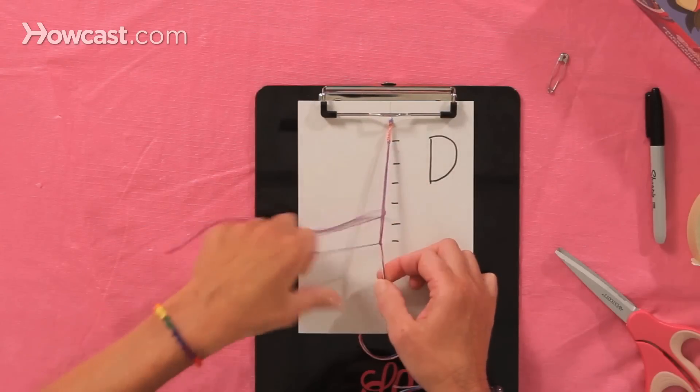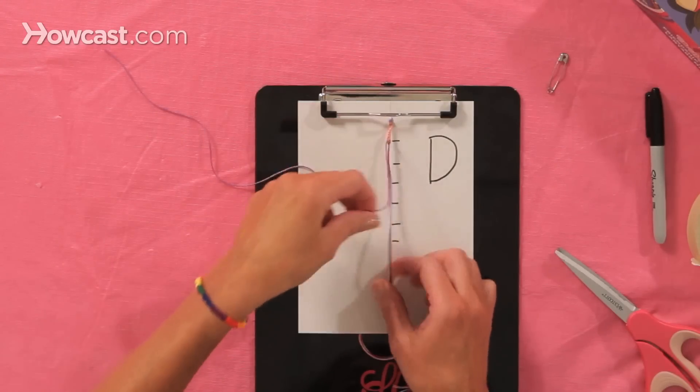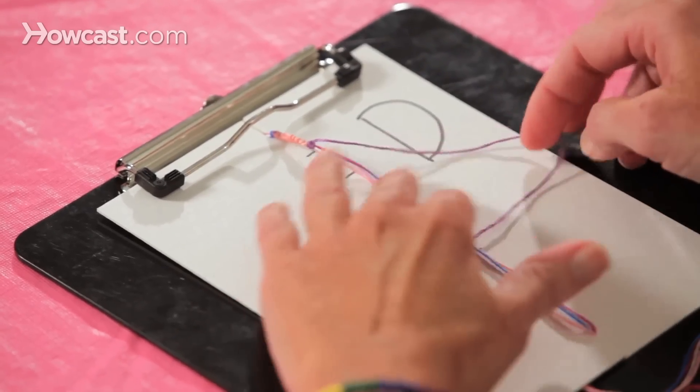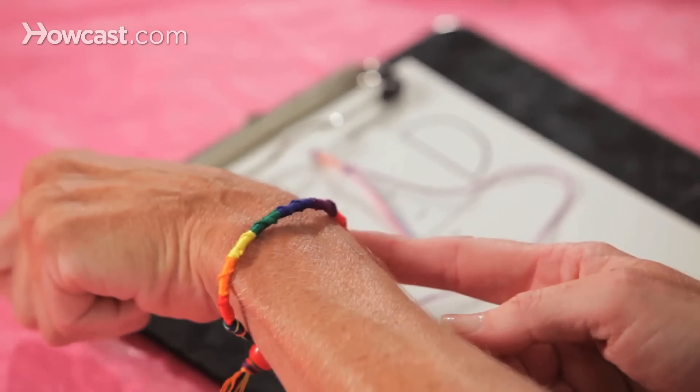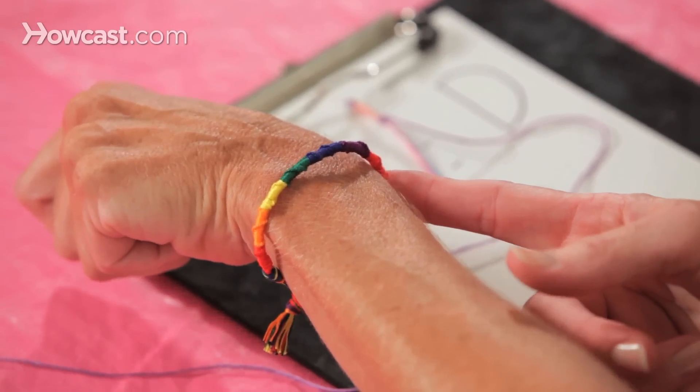Okay, so you'll do this with each of the different colors until the bracelet is long enough to fit your wrist. Here's a sample right here on my wrist of what the Chinese staircase bracelet looks like. And that's how you make a Chinese staircase friendship bracelet.